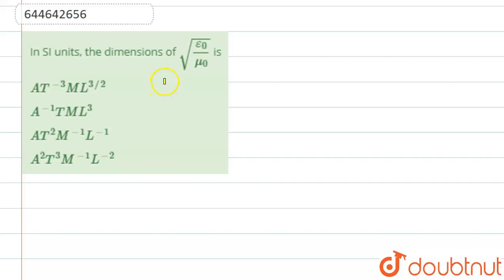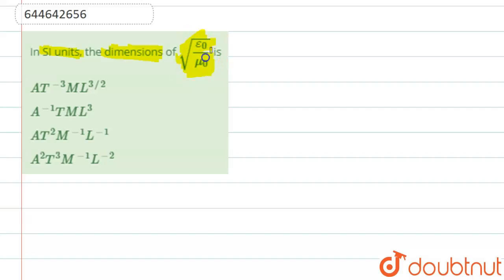We are going to see this question: find the dimension in SI units of the quantity one over root epsilon naught by mu naught. We need to find the dimension of this quantity.